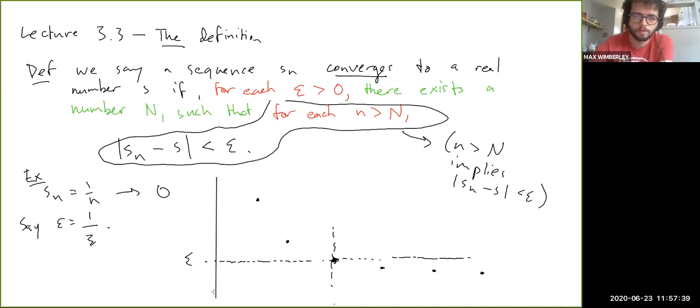These things are very finicky. So we could pick capital N equals three, for example, because then for little n bigger than capital N, pictorially you can just see that they all stay below.